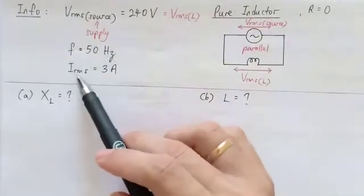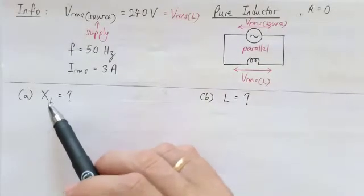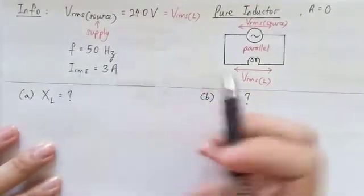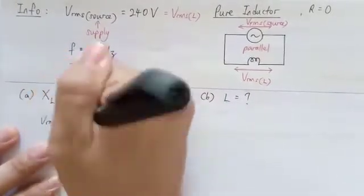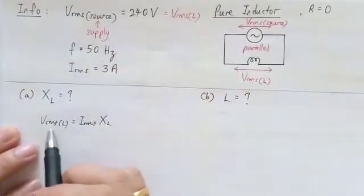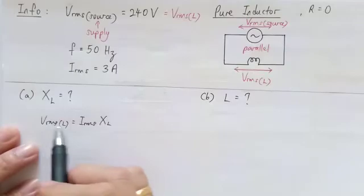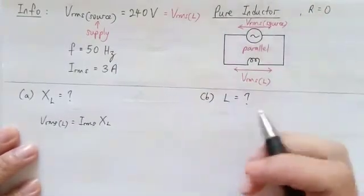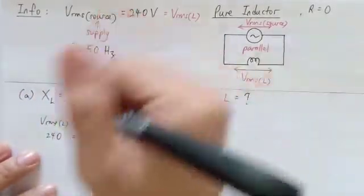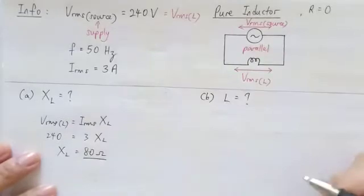We already have VRMS_L and IRMS, so we use the formula: VRMS_L = IRMS × XL. Substituting 240 volts for VRMS_L and 3 ampere for IRMS, we get XL = 240 / 3 = 80 ohm. So the inductive reactance XL is 80 ohm.